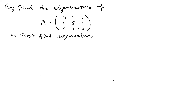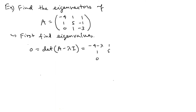To find eigenvalues, we set 0 equal to the determinant of (A − lambda·I). Subtracting lambda from the diagonal entries gives the matrix: [[-4−lambda, 1, 0], [1, 5−lambda, 1], [1, -1, -3−lambda]].